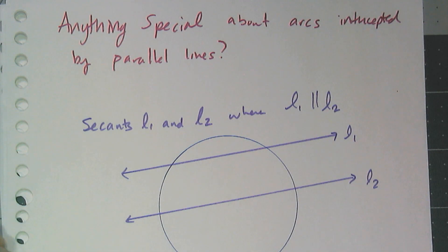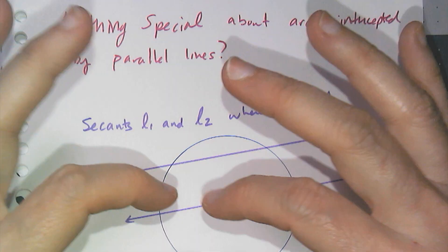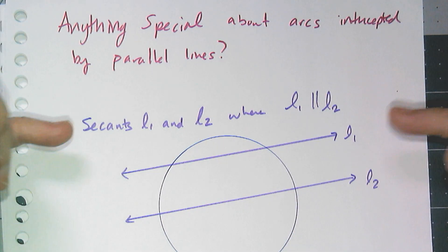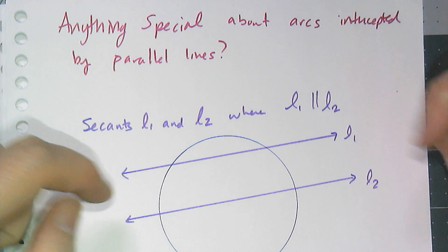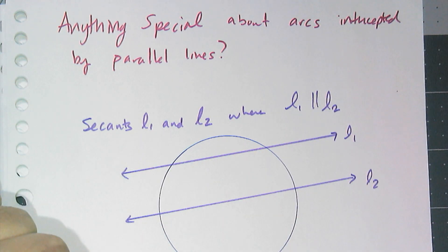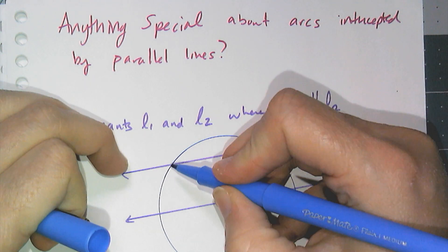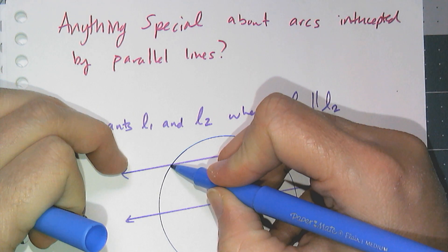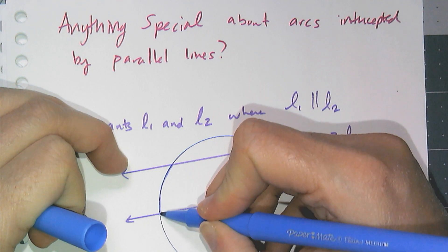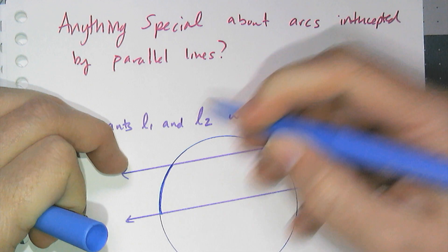So it's been a while since we looked at parallel lines. So if I take a circle and I throw some parallel lines in there, remember these are called secants because they are lines that intersect the circle twice, and I say line one is parallel to line two, I get intercepted arcs. So intercepted arcs don't have to be formed by central and inscribed angles. They can also be formed by parallel lines.